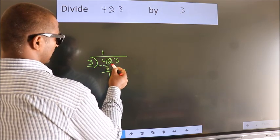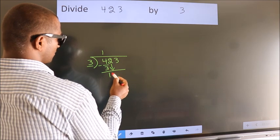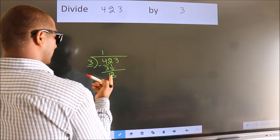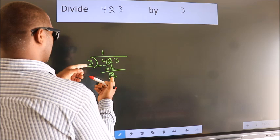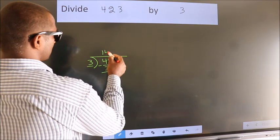After this, bring down the beside number. So, 2 down. So, 12. When do we get 12 in the 3 table? 3 fours, 12.